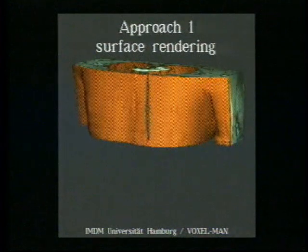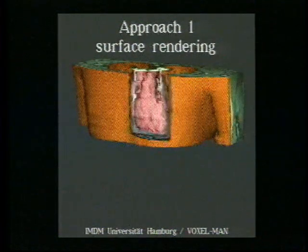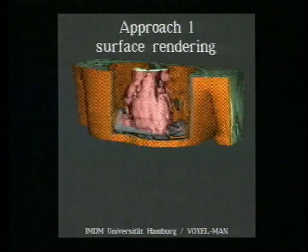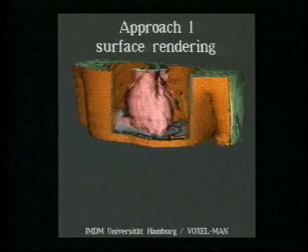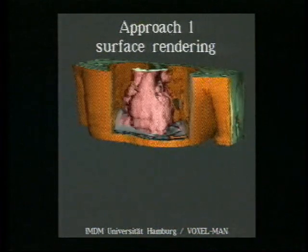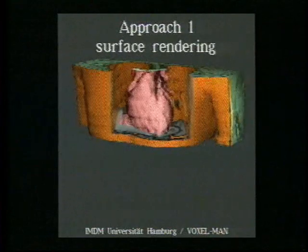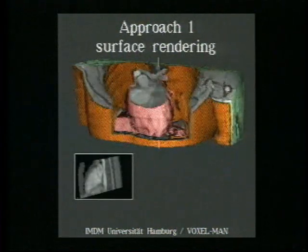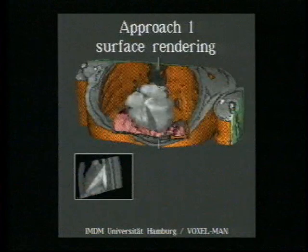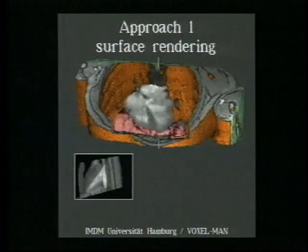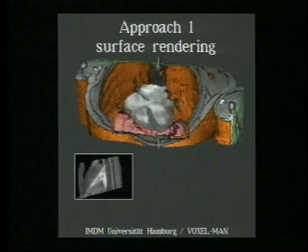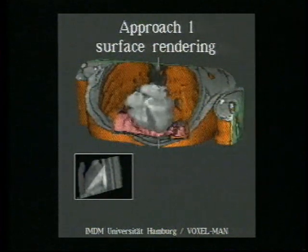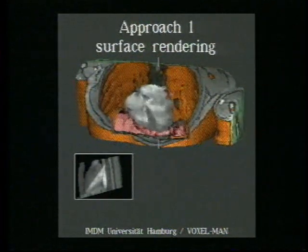Different rendering methods were investigated. Here, surface rendering was chosen. Unfortunately, not much detail was visible. However, by cutting, the four-chamber view could be displayed. A lateral view at the lower left corner shows the position of the cut plane. This heart was the first one ever reconstructed from a living person.